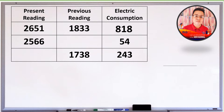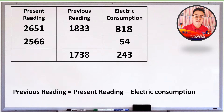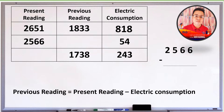Sa susunod na example naman ay nawawala ang previous reading. Ang formula sa pagkuha ng previous reading ay present reading minus electric consumption. Ang ating present reading ay 2,566 kWh. At ang ating electric consumption naman ay 54 kWh. Ipag-subtract natin sila.